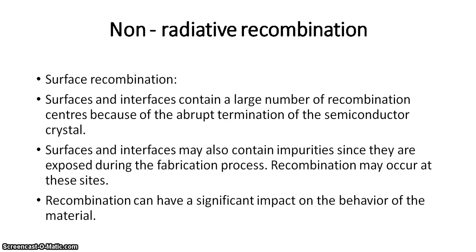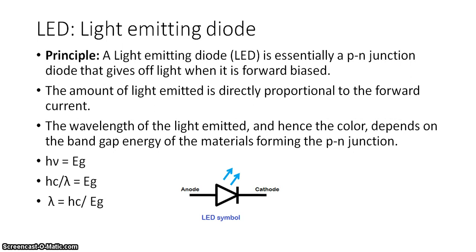Surface recombination: surfaces and interfaces contain a large number of recombination centers because of the abrupt termination of the semiconductor crystal. Surfaces and interfaces may also contain impurities since they are exposed during the fabrication process, and recombination may occur at these sites. This recombination can have a significant impact on the behavior of the material. So we have now seen what radiative recombination and non-radiative recombination are, and these phenomena are applied in optoelectronic devices.